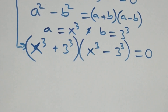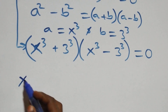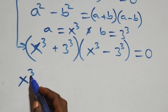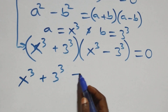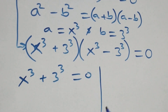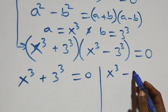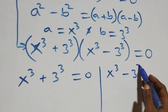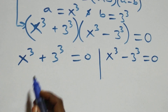The next step gives us two possible cases. The first case: x raised to power 3 plus 3 raised to power 3 equals 0. The second case: x raised to power 3 minus 3 raised to power 3 equals 0.